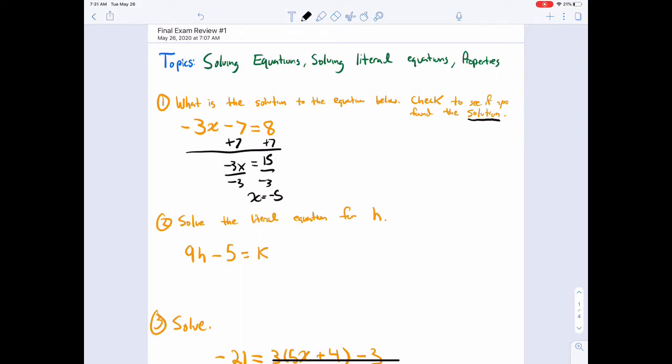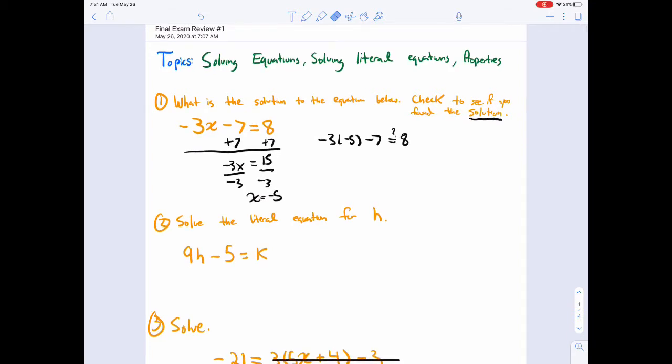And it says check to see if you found the solution. Solution is gonna mean does your value make an equation true. So if you plug in negative 5 for x, does it make the equation true? We'll put a question mark because we don't know if it's true yet. Negative 3 times negative 5 is 15 minus 7, does that equal 8? Yeah it does. So yes, negative 5 is the solution, it does make the equation true.